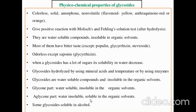Coming to the physico-chemical properties of glycosides: generally these are colorless, solid, amorphous, and non-volatile. Flavonoids, which come under glycosides, are generally yellow in color, and anthraquinone glycosides are red or orange — these are exceptional cases. Glycosides give a positive reaction with Molisch and Fehling solution tests after hydrolysis, since the sugar moiety released will give positive tests for carbohydrates.